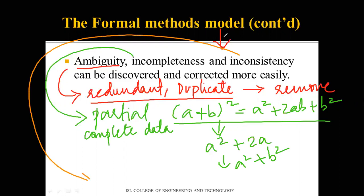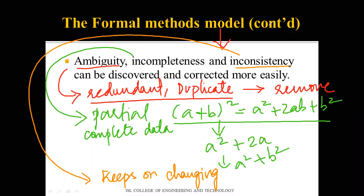The third problem is inconsistency — data that keeps changing and is not the same every time. For example, running a performance test might give 70% one time and 50% another time. The formal methods model removes ambiguity, incompleteness, and inconsistencies within data which might sometimes go undetected.